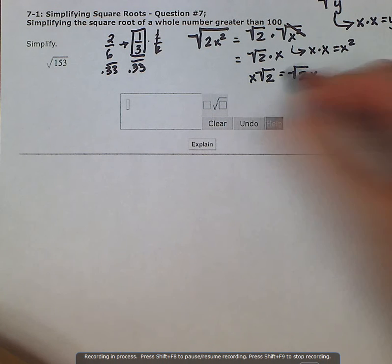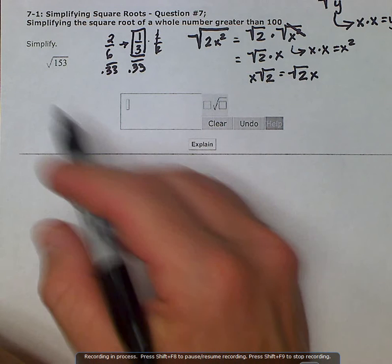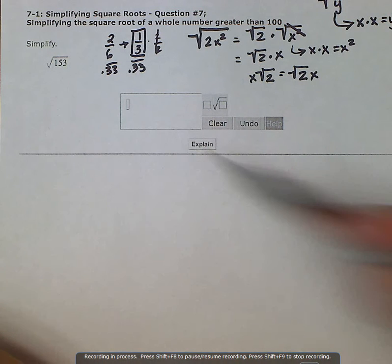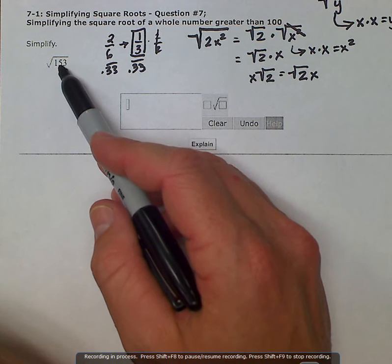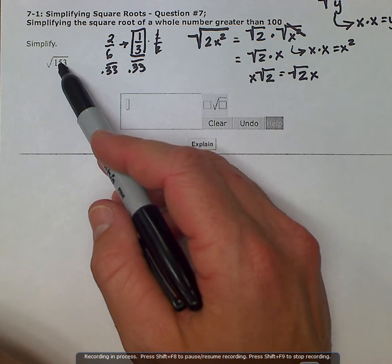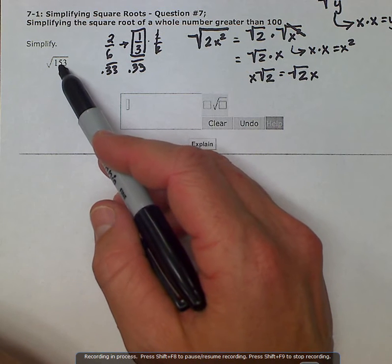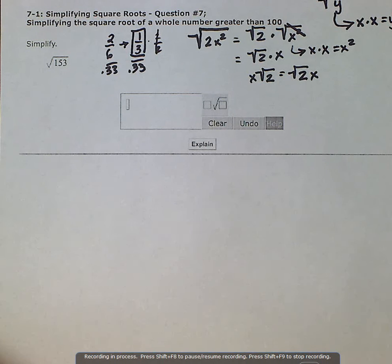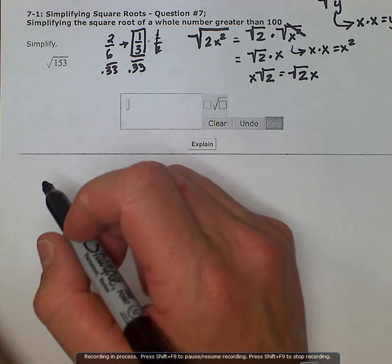So what we're trying to do then is pull out any perfect square from this number in the radicand and leave whatever is left over, any factor that's left over under the radical. And the way we do that is through prime factorization.